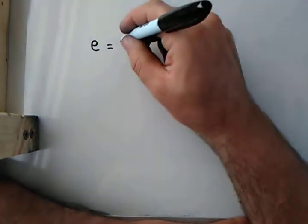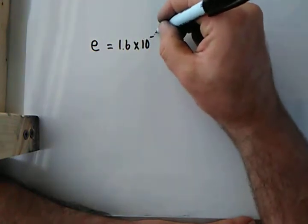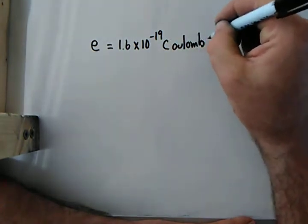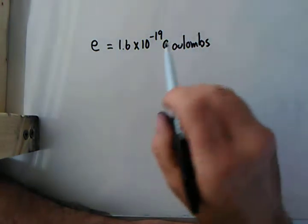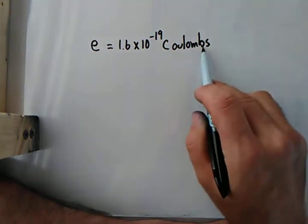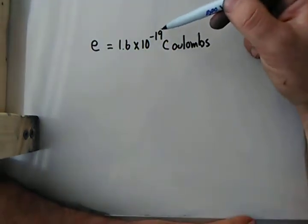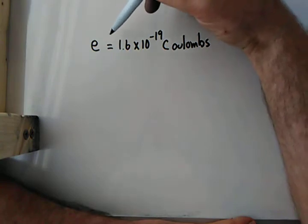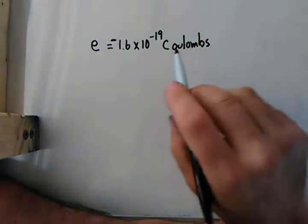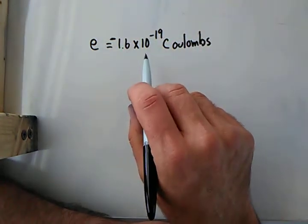So the value for the electron was 1.6 times 10 to the negative 19th coulombs. Now, coulombs we know is a unit for charge. And we know now that the electron has a charge of 1.6 times 10 to the negative 19th. One important factor I forgot to put for you is that it's a negative charge. So that's a tiny number, and that shows us that the electron itself has a very small charge.